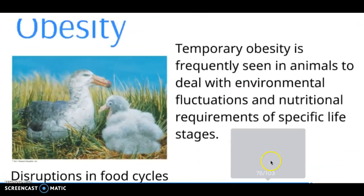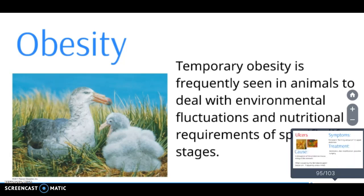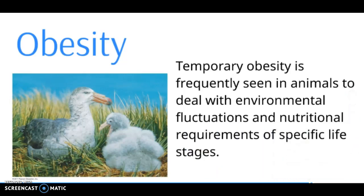The next topic is about obesity. Obesity is frequently seen in animals dealing with environmental fluctuations and nutritional requirements. An animal could develop a certain digestive system that allows them to take in a certain amount of nutrition. However, if the environment changes and the animal is eating more than they are used to and more than evolution allows them to normally eat, then they're eating a larger amount of food and digesting more nutrients, which makes them obese. So one cause of obesity is environmental change.